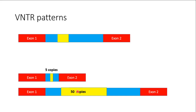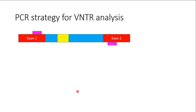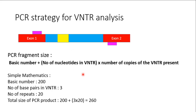The strategy for VNTR analysis is to use primers that flank the VNTRs, amplify them, then run electrophoresis and observe the fragment sizes. The fragment size of a VNTR analysis will consist of the basic number of nucleotides plus the number of nucleotides present in the VNTR multiplied by the number of copies of the VNTR.